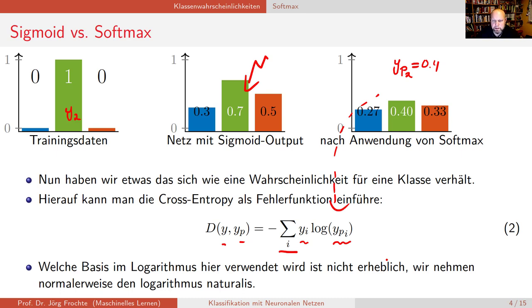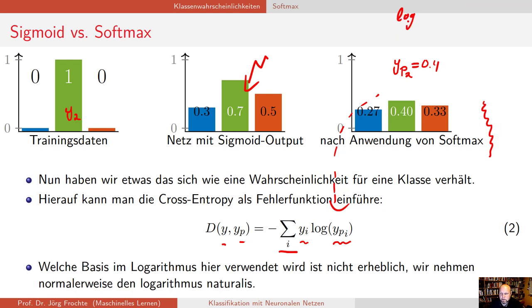Da kommt noch was dazu, was man natürlich bedenken muss. Sie wissen, der Logarithmus von 0 existiert nicht. Das heißt, sollte hier tatsächlich eine echte 0 rauskommen, müssten Sie in der Praxis sowas einsetzen, wenn Sie das selber implementieren, wie log eps immer mindestens, also log ypi plus epsilon, damit Sie nicht eine Fehlermeldung bekommen.